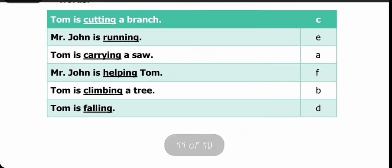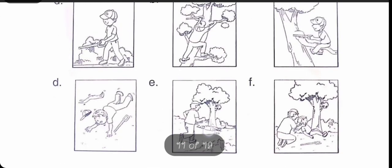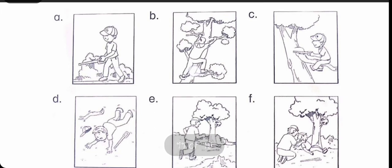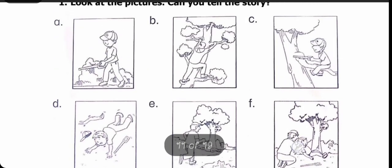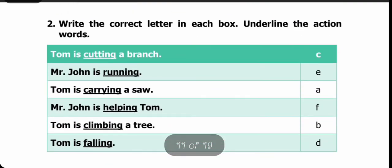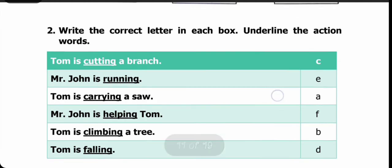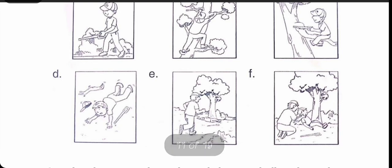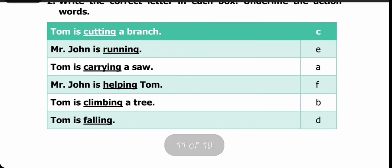Next: Tom is climbing a tree. B mein hum dekh rahe hain ki Tom jo hai wo tree pe chadh raha hai. Is statement ke saamne hum B write kar denge. Next: Tom is falling. D picture mein we can see ki Tom is falling. Yahaan pe hum D write kar denge. Clear students?